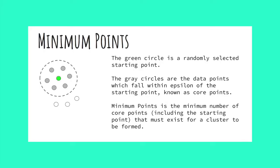The second term is core point. Core points are data points which fall within epsilon of the starting point. In this image, all gray circles are core points. The white circles are not core points because they aren't within epsilon of the starting point.